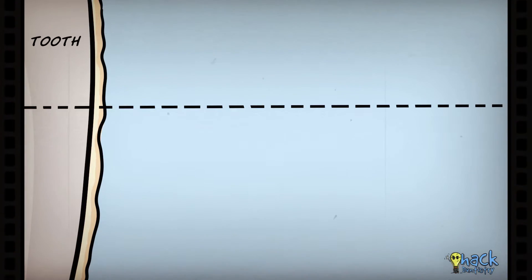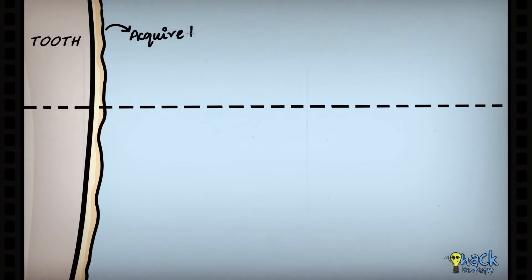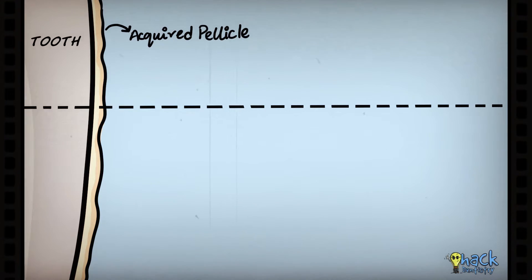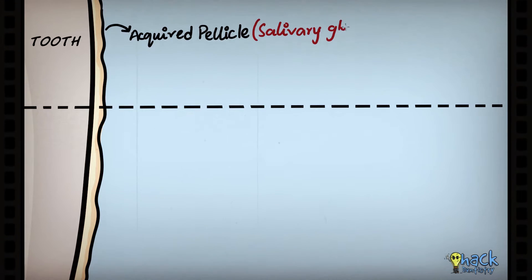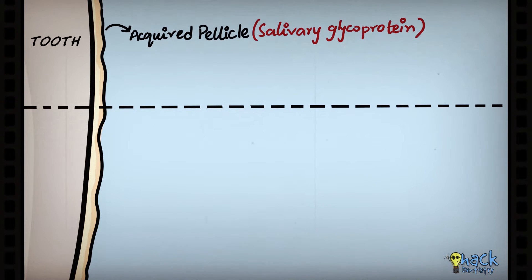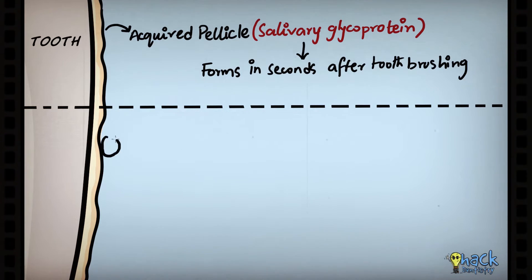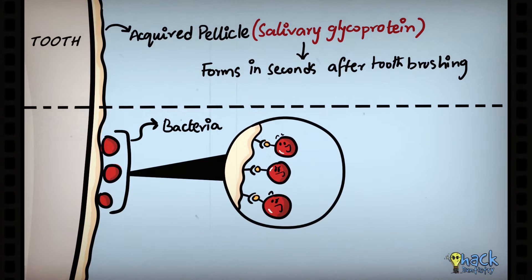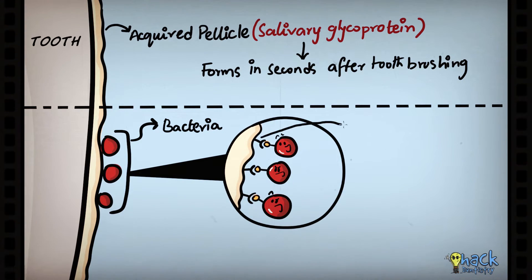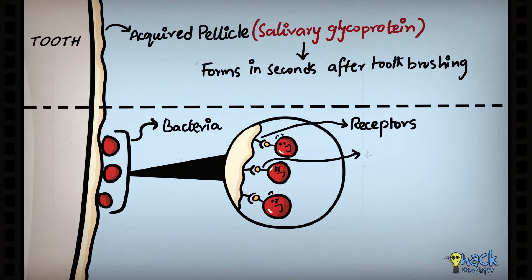Dental plaque formation starts with the acquired pellicle formation. The acquired pellicle is a coating made of salivary glycoproteins on the surface of the tooth, which immediately forms in a matter of seconds after tooth brushing. This coating of salivary pellicle helps in adherence of bacteria to the tooth via receptors that are recognized by bacterial molecules called adhesins.